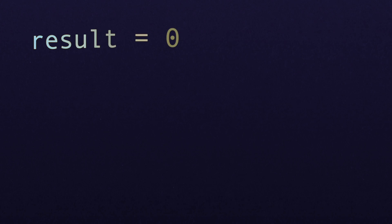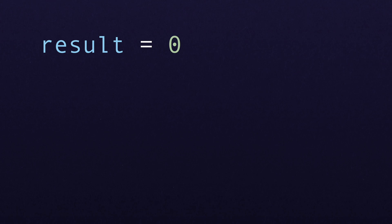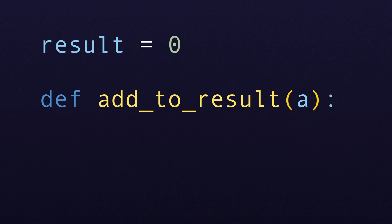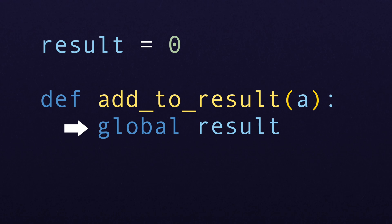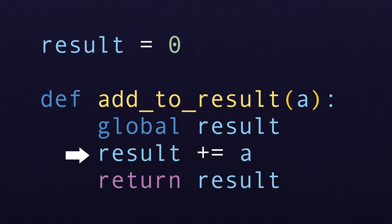Now let's take a look at a similar but impure example. First we'll declare a global variable called result and set it equal to zero. Next we'll define a function called addToResult. This one only takes one input, we'll call it A. The first thing it does is declare that result is a global variable — in Python, this is required just so that we're allowed to access that global variable from within a function. Next, we'll add A to the result and return that sum.